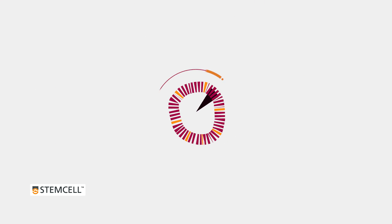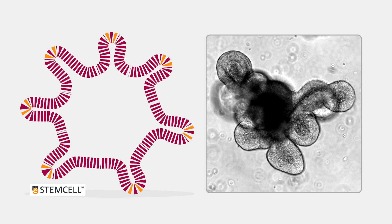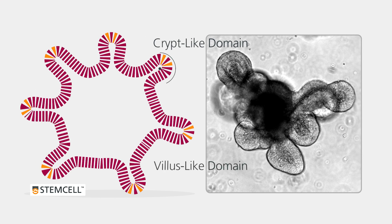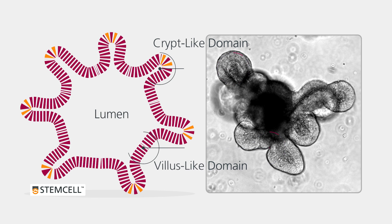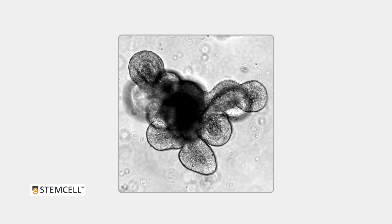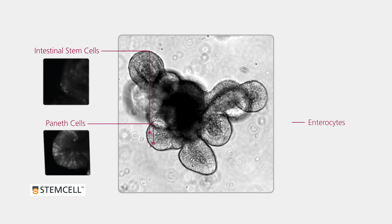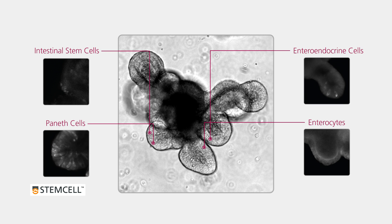Intestinal organoids are three-dimensional, multicellular structures that retain key features of the intestinal epithelium, such as the crypt and villus-like domains and a central lumen. Organoids also contain all of the major cell types, including the intestinal stem cells, paneth cells, enterocytes, enteroendocrine cells, and goblet cells.